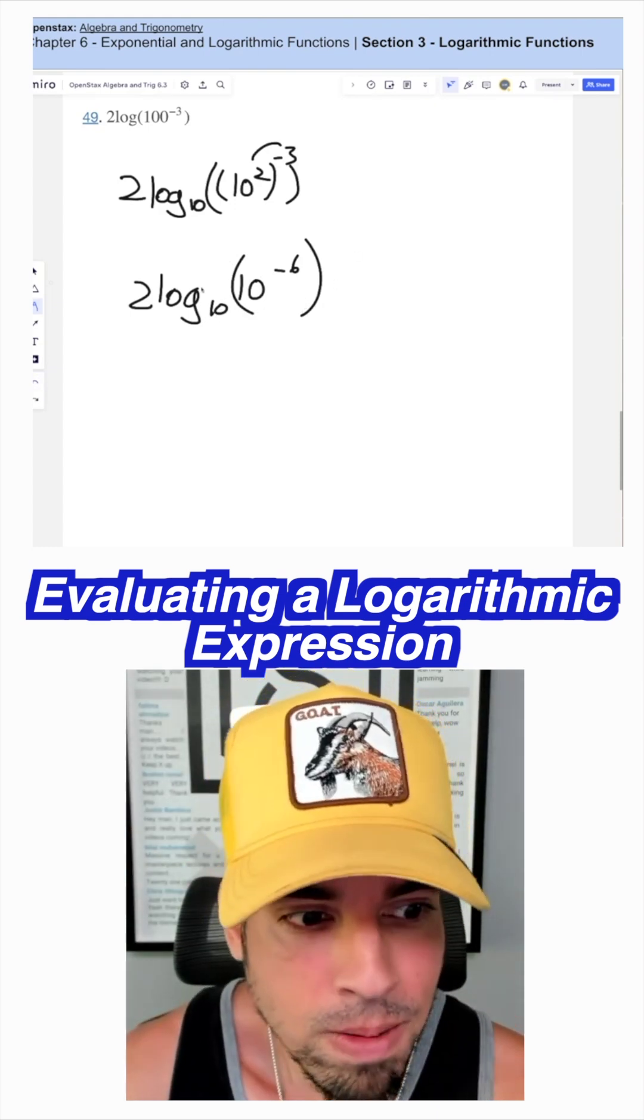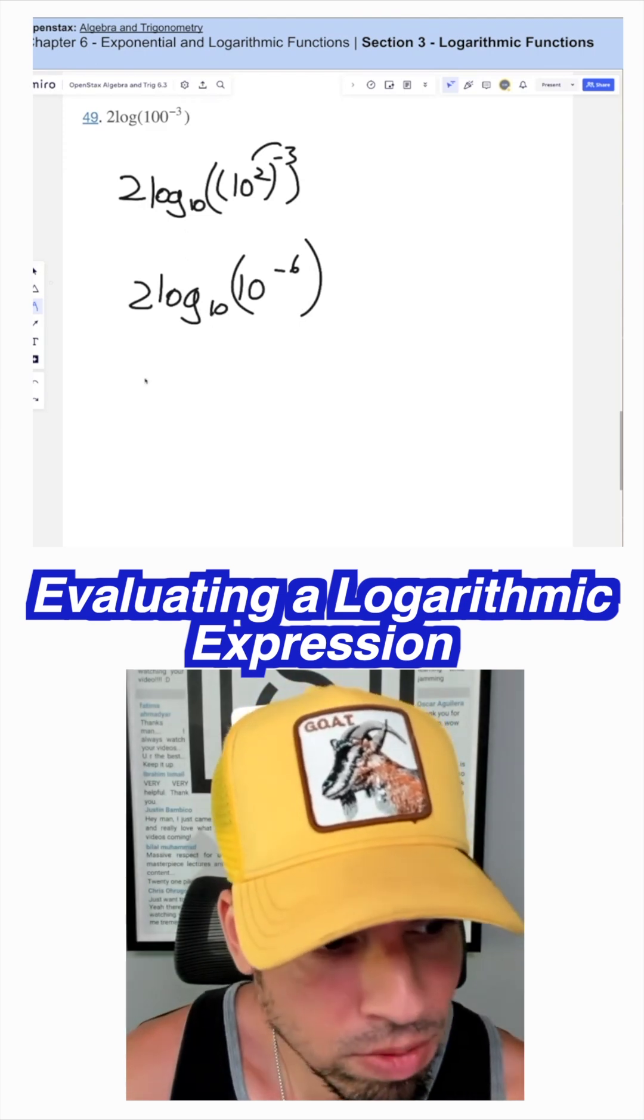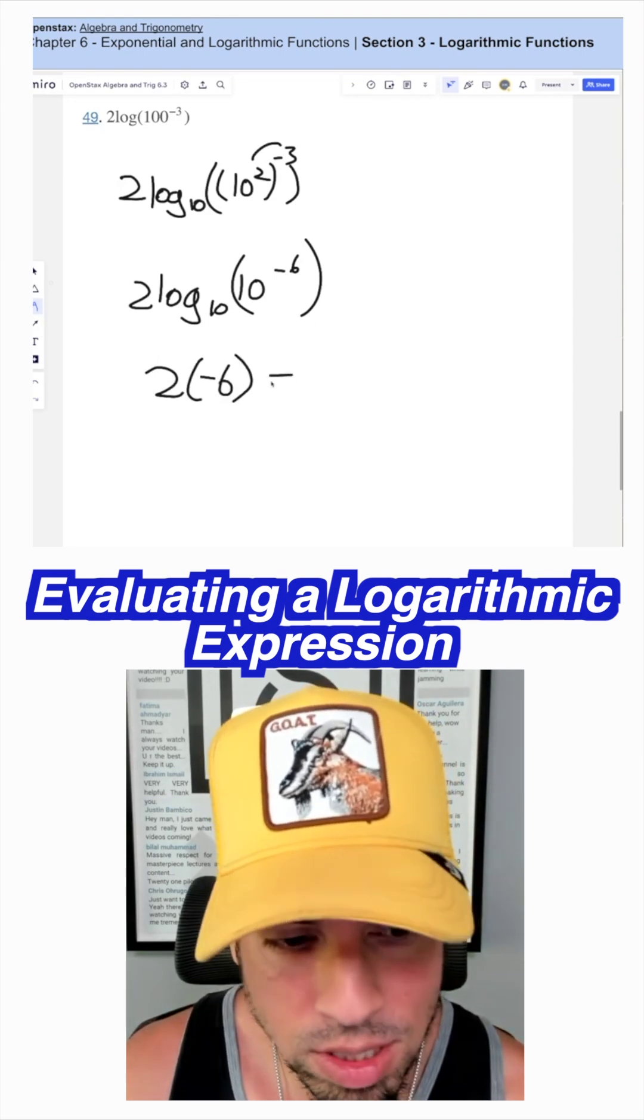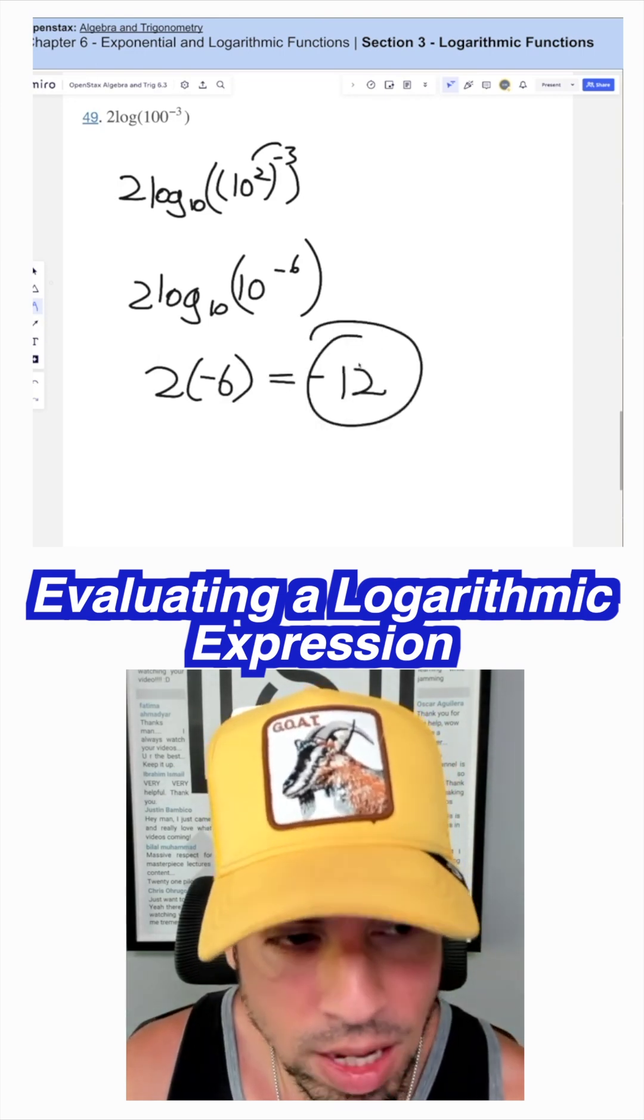Well, of course, it's negative six. So this is a nice thing that we can simplify right off the bat, that just becomes negative six, then we have two times negative six equals negative 12. So that's the value.